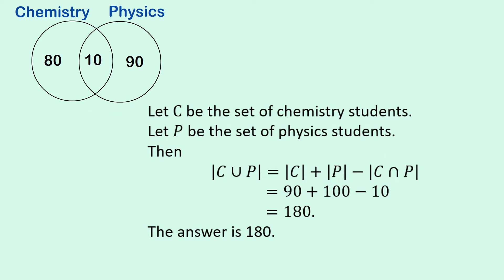Let C be the set of chemistry students, and let P be the set of physics students. Now what we need is this thing here. This is the union of the set C and P. So that's all the students who are doing chemistry or physics. And these bars here mean that we're interested in the cardinality of this set, or the number of elements in the set.